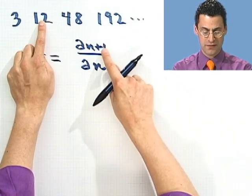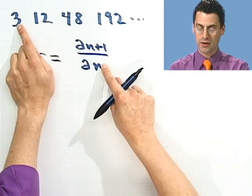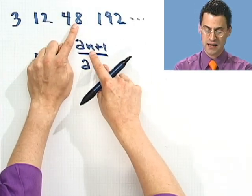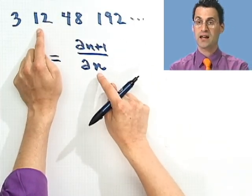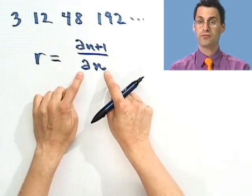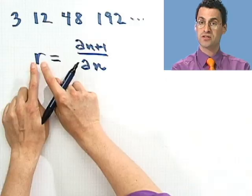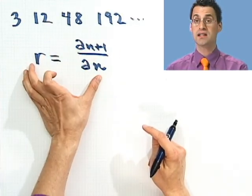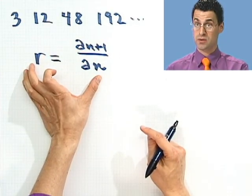And so what we say is, a geometric sequence is one where we have a constant ratio. If you take the nth plus first term and divide it by the nth term, that's always the same. Look at it. If I take 12 and divide it by the previous term, 3, I get 4. If I take 48 and divide it by the previous term, I get 4. If I take 192 and divide it by the previous term, I get 4. So, it's always the constant ratio, it's always the same. So this, in fact, explains and defines a geometric sequence.